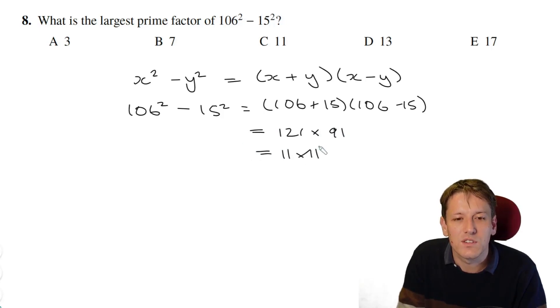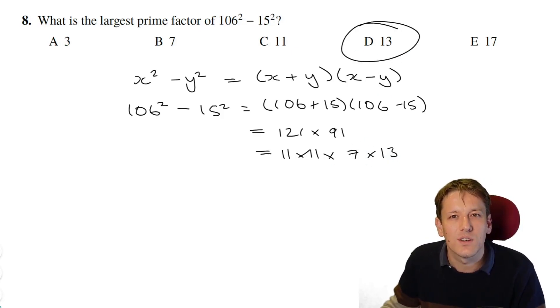121, of course, is 11 squared, 11 times 11, and 91 is 7 times 13. So the prime factors of the answer here are 7, 11, and 13, and the largest one of those is 13, and so the answer is D.